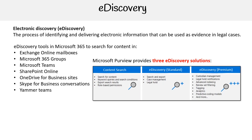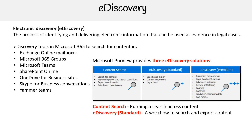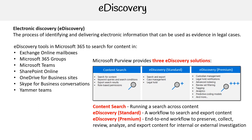Microsoft Purview provides us with three eDiscovery solutions. The first one is Content Search, which lets you run a search across content. The second one is eDiscovery Standard, also known as Core Discovery, which is a workflow to search and export content. And the last one is eDiscovery Premium, also known as Advanced eDiscovery, which is an end-to-end workflow to preserve, collect, review, analyze, and export content for internal or external investigation. We'll talk more about these three solutions in the next slides.